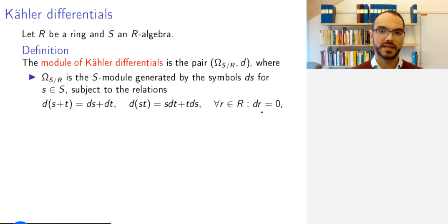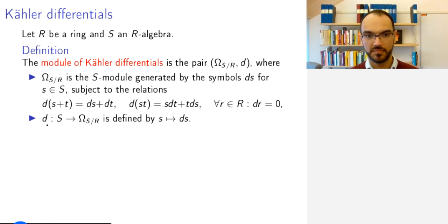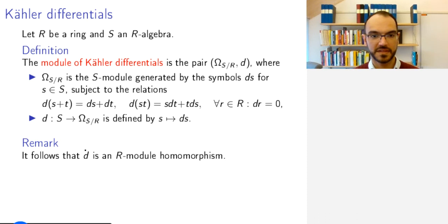So D is simply the map from S to Ω_{S/R} that maps s to the symbol ds. From this it follows that D is an R-module homomorphism, so D is a map of abelian groups because of this first condition.